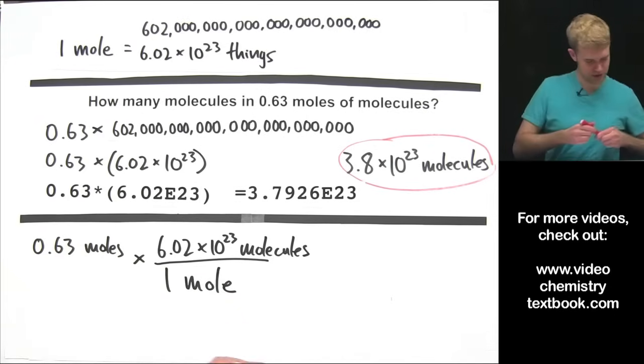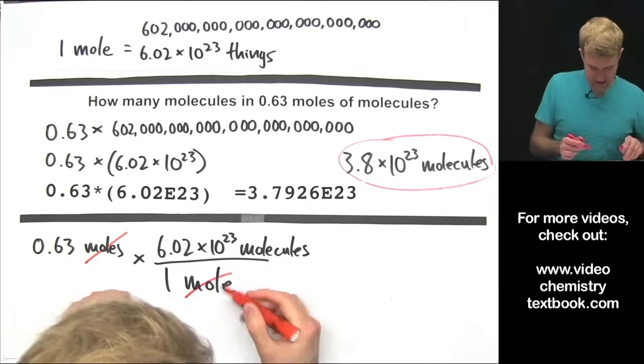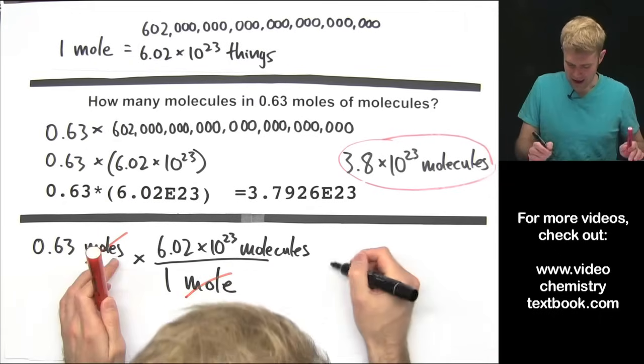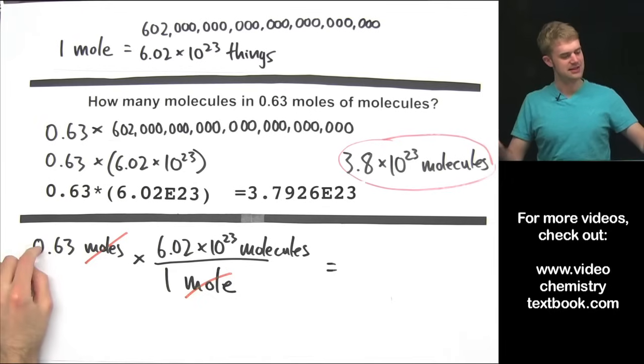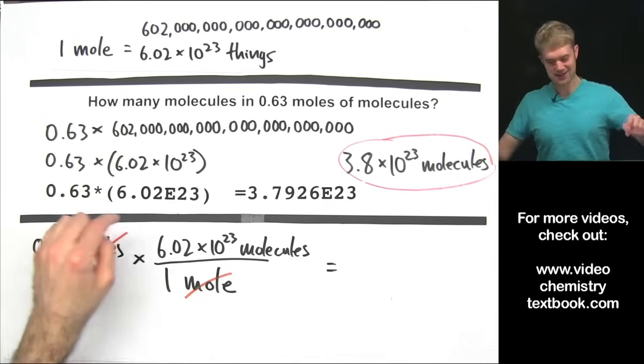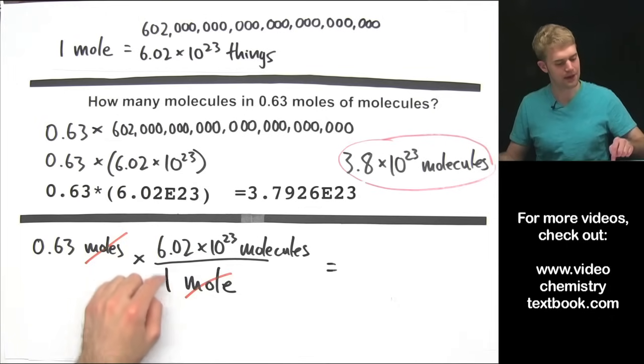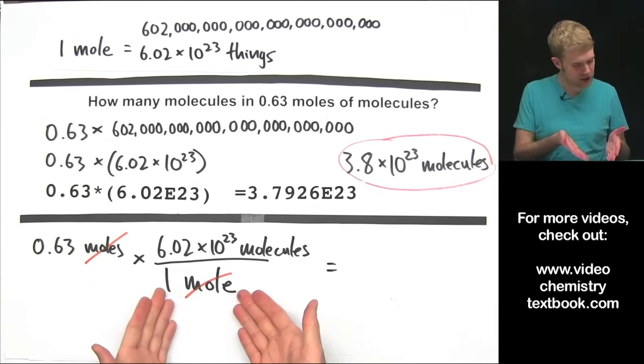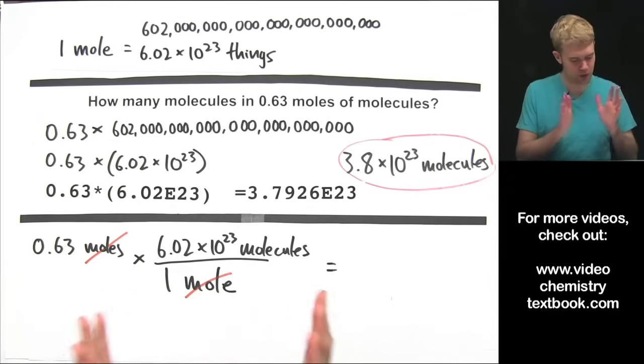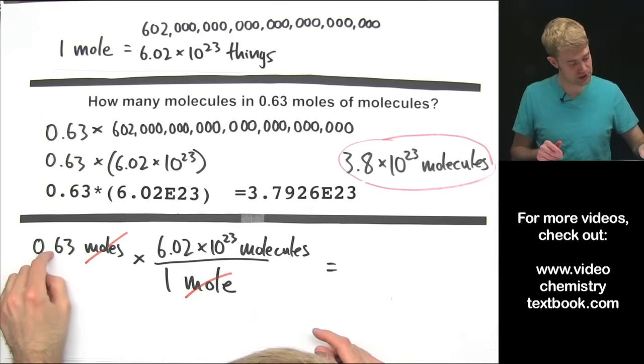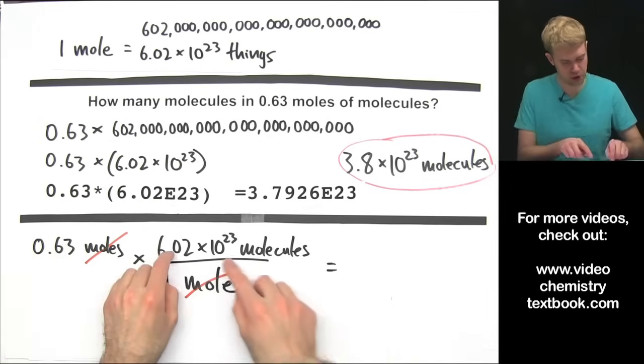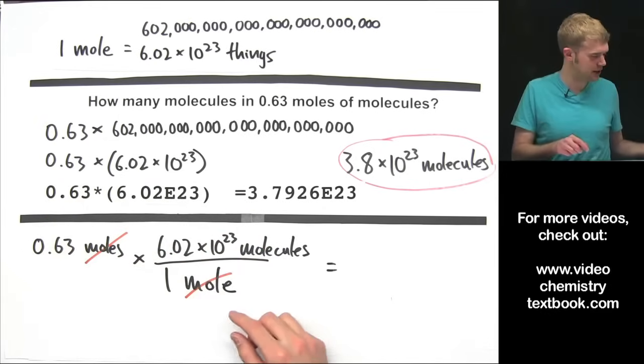Moles on the top, moles on the bottom. Cancel those out. And the math here is going to be 0.63 times 6.02 times 10 to the 23rd divided by 1. Dividing it by 1 doesn't really change things much. So the only math that we're really doing is 0.63 times 6.02 times 10 to the 23rd. It's exactly what we did up here.